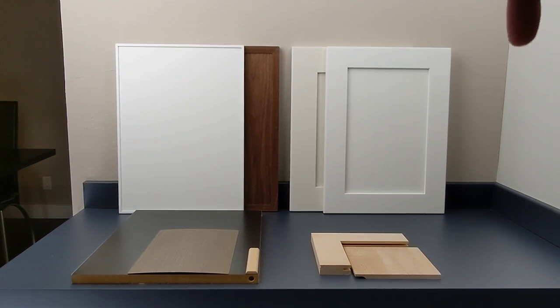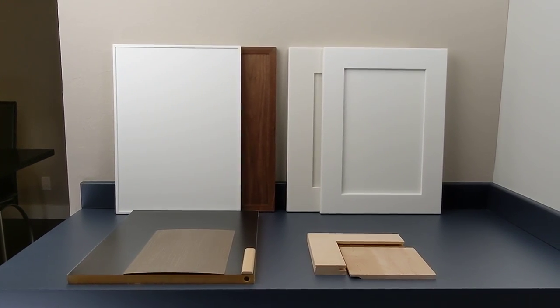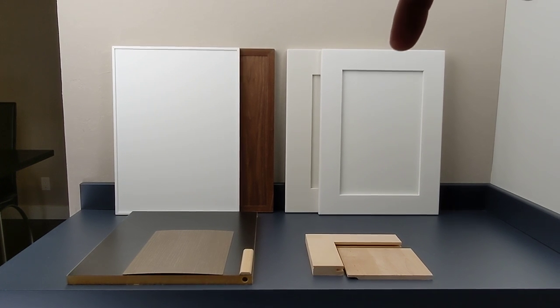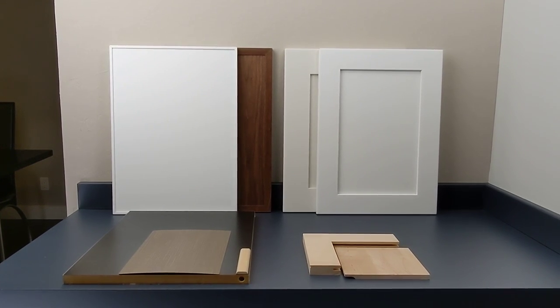So on the right here we've got the Creekside door and you've got the Whistler door right behind it. So the Creekside is a two and a quarter inch frame and the Whistler is two and three quarter inch frame.